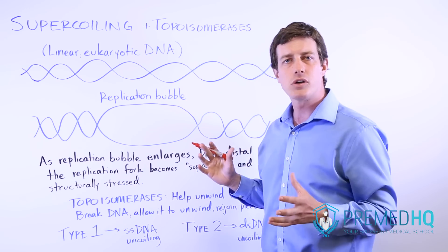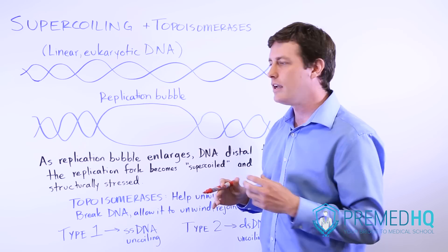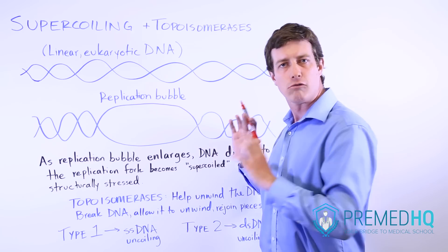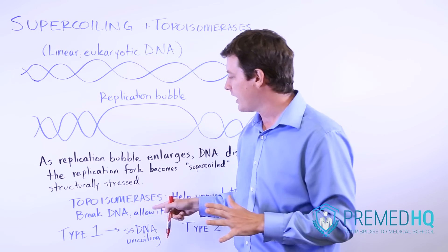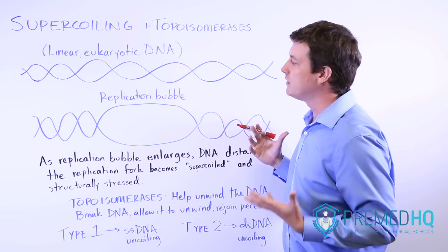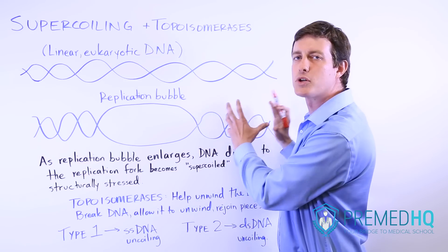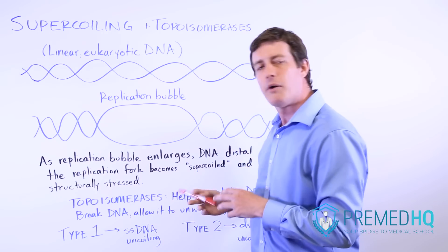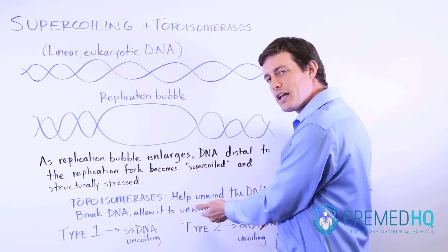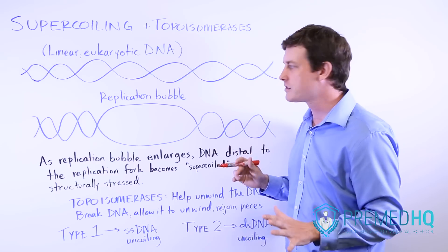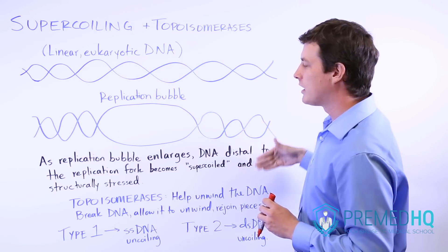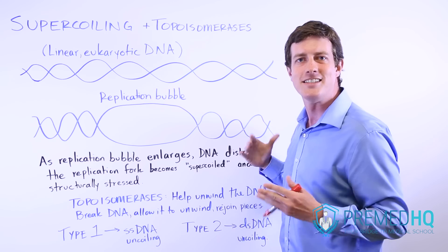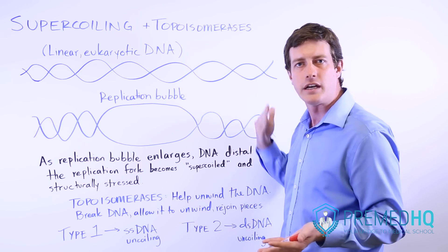Remember that an isomer is something that has the same chemical formula but somehow a different structure. In this case, topo relates to topography, so it means that it changes the spatial arrangement of that structure without doing anything fundamentally different, thus leaving it as an isomer. Ultimately, what the topoisomerase does is relieve this supercoiled stress by breaking the DNA in certain places, allowing it to unwind and relieve some of that stress, and then rejoining the pieces so that it's still an intact DNA structure.